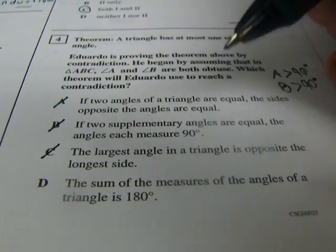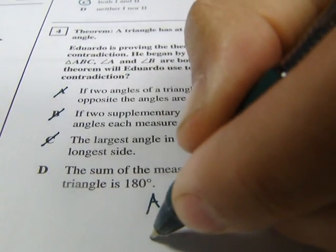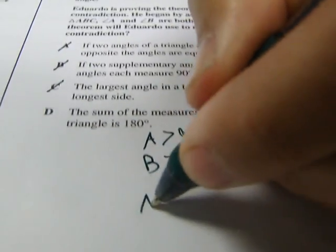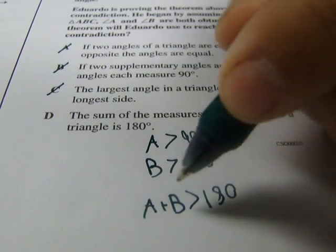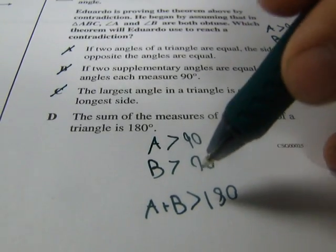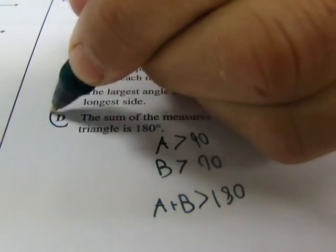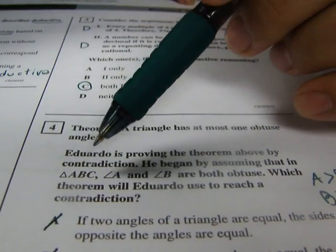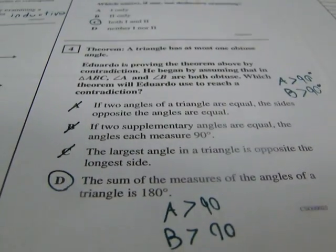There it is, because if A is greater than 90 and B is greater than 90, then A plus B is greater than 180. And that's without even having C in there. So if it has to add up to 180, then only one of them could be more than 90, or it'll be too big. So that's the problem. That's why Eduardo's proof by contradiction will turn out to fail. So we've got it. D is the answer.